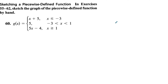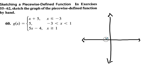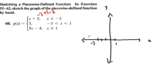Sketching a piecewise function. Key transition points are at x = negative 3 and x = 1. For the first piece, x + 5, we plug in negative 3 and get negative 3 + 5 = 2. So at x = negative 3, the linear graph with positive slope includes the point (negative 3, 2) — a solid dot — and continues from the left.